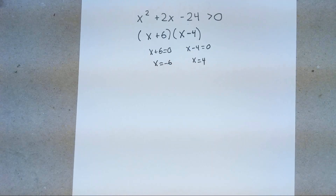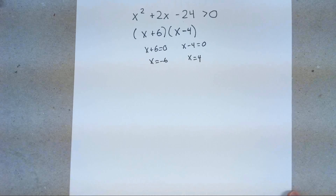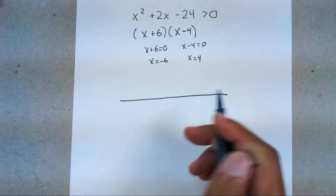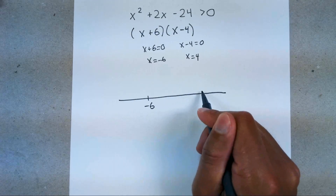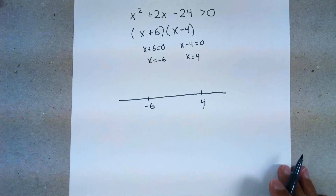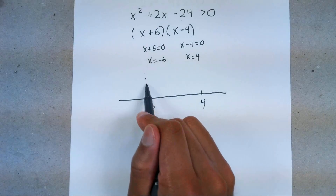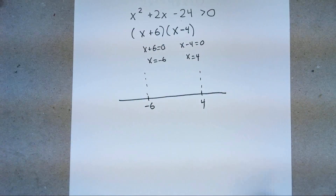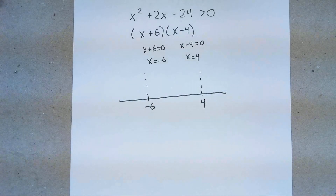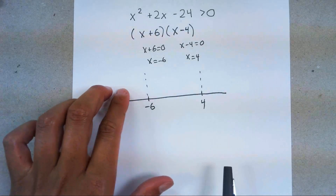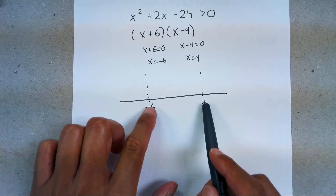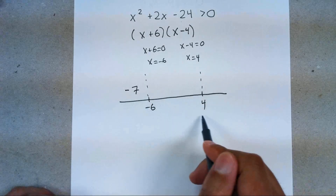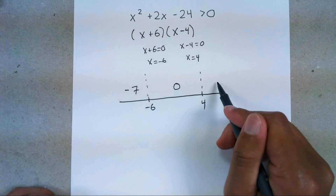Your next step is to put it on a number line. We're going to graph −6 and 4 on a number line, put negative 6, put 4. Then I like to make boundaries — separate every single boundary from each other. Then you want to pick numbers: it doesn't matter what numbers you pick, as long as you pick numbers less than −6, in between −6 and 4, and greater than 4. I'll pick −7, 0, and 5.